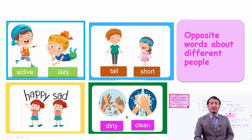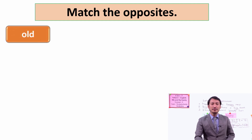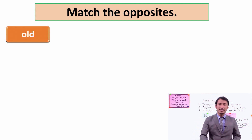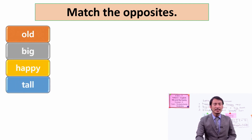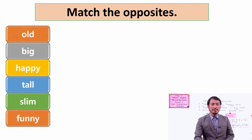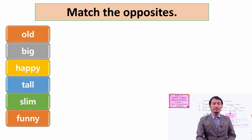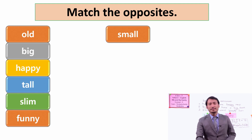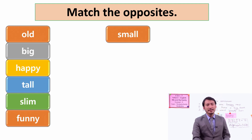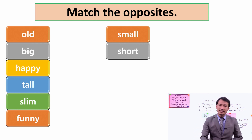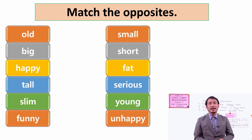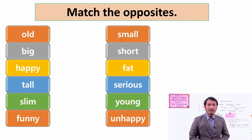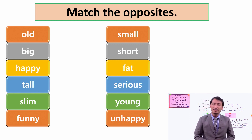Now after this, I want you to match the opposite words from your book. Can you look at your book on page number 11? This is the exercise for matching the opposites. The words are old, big, happy, tall, slim, funny, and the pair words for opposite: small, short, fat, serious, young, and unhappy. Can you match these words to their opposite meaning?